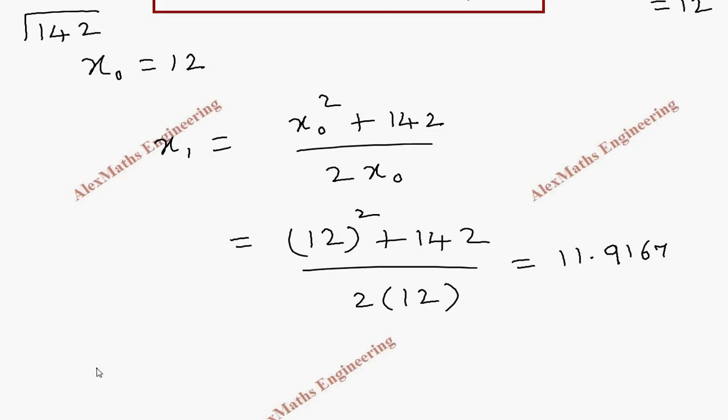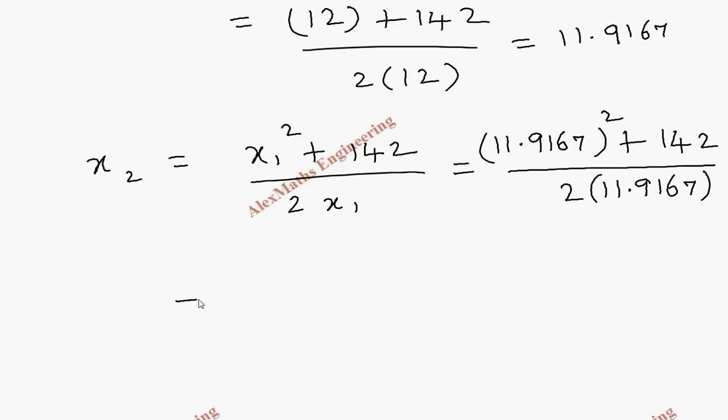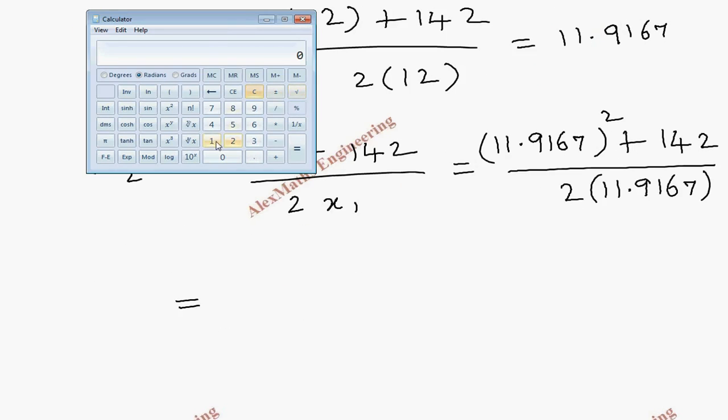Now taking this as x1, if I find x2 it is x1 square plus 142 divided by 2x1. So it is 11.9167 whole square plus 142 divided by 2 into 11.9167. This is after rounding off 11.9164.